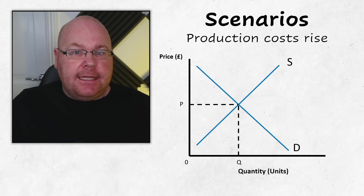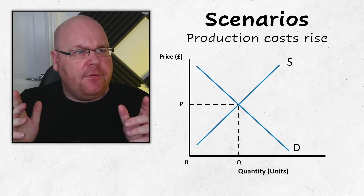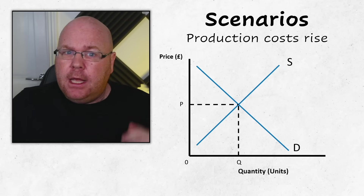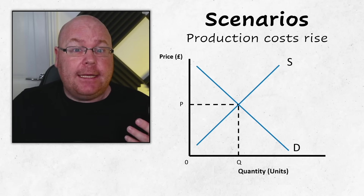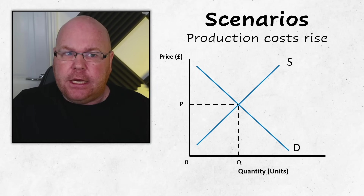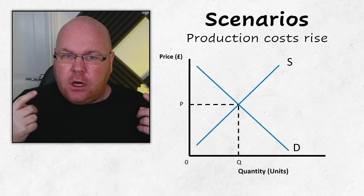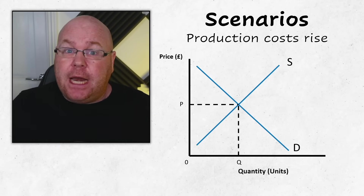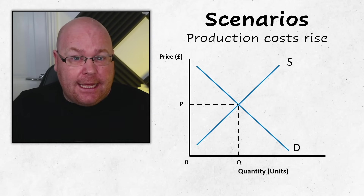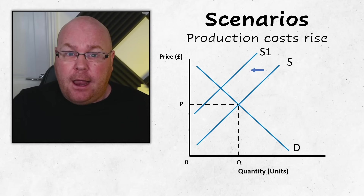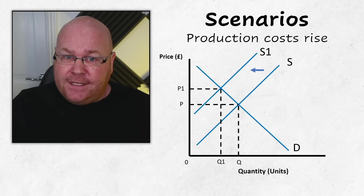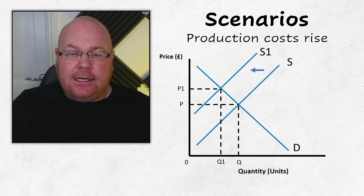Not all scenarios affect consumers — some will have a far bigger impact on producers and firms. For example, if production costs in a particular industry have risen, think about it as a supplier: with rising costs you would likely scale back production and produce less instead. This means supply shifts inwards to the left. Drawing on the new equilibrium and labelling it P1 and Q1 satisfies the examiner that you know how to illustrate shifts in the supply curve.